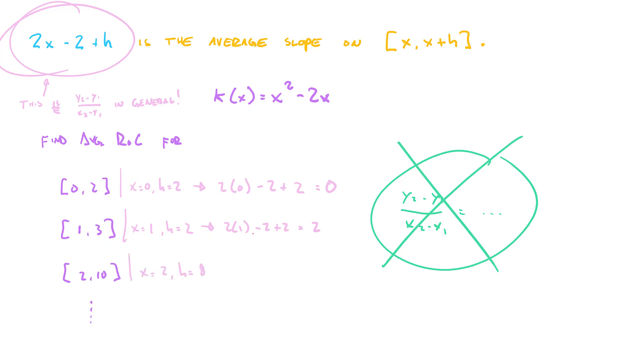And the next one, x is 2. h is 8 because the distance between 2 and 10 is 8. So again, we run it through the formula. We get 10. So we're able to find these average rates of change on intervals really quickly because we calculated the slope in general. And that is the usefulness of the difference quotient.